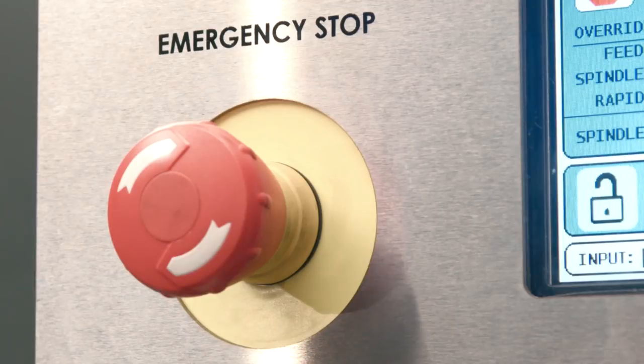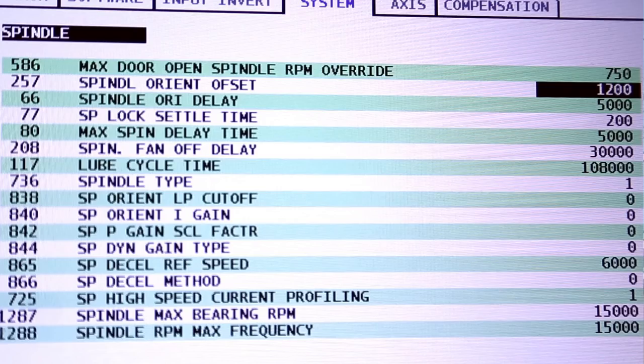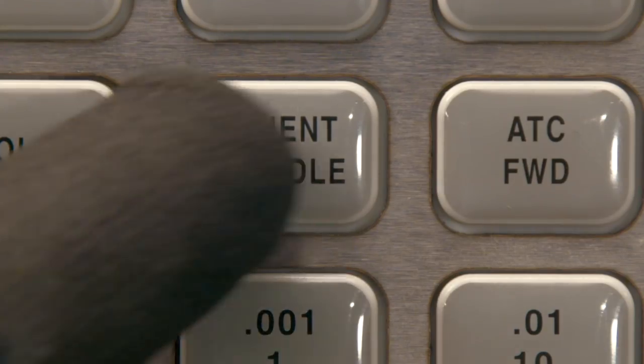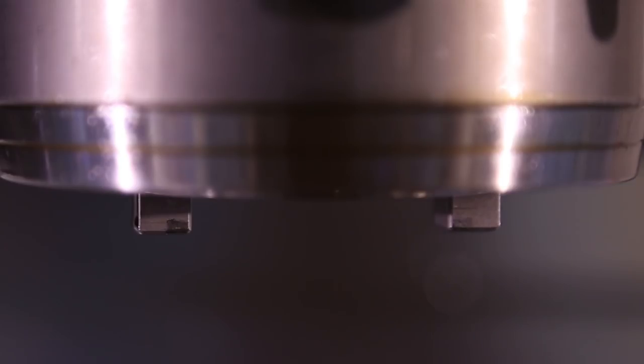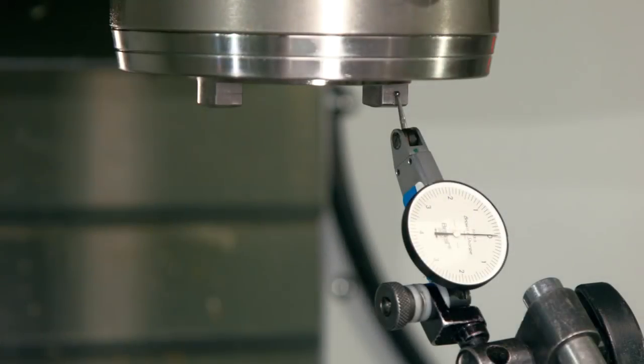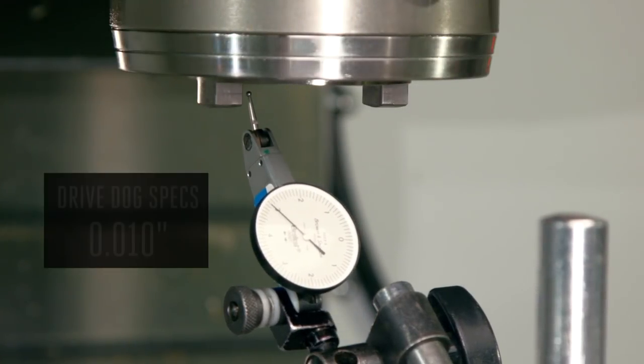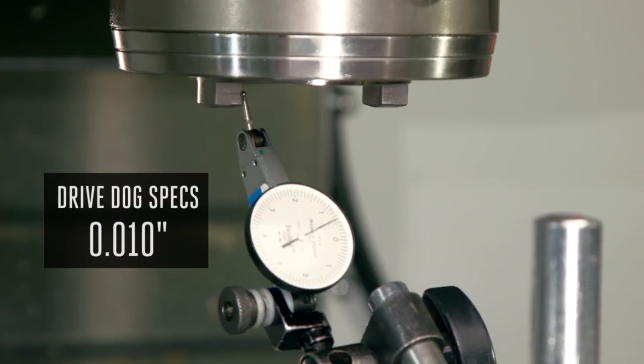Move the indicator out of the way and press e-stop. Enter a much smaller number. Press spindle orient again and then see how close it gets. Repeat this process until the drive dogs are within 10 thousandths of an inch in the X axis direction.